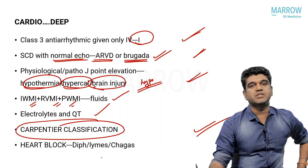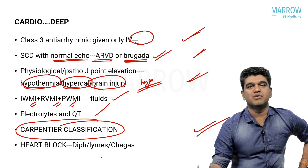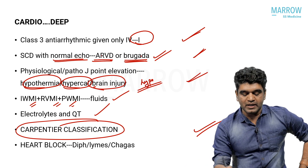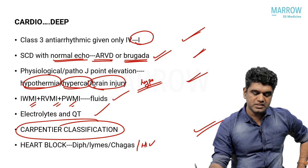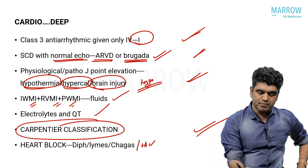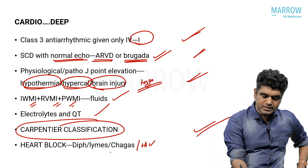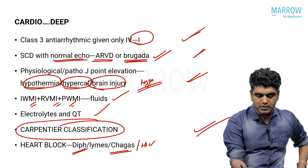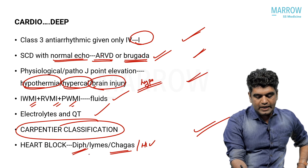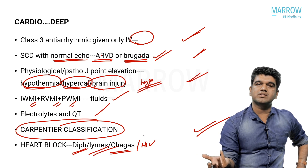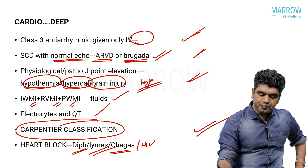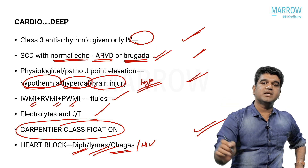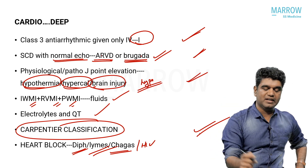Heart block caused by which organism — even if you watch the videos you may not answer this tough question. Diphtheria, Lyme, Chagas, and HIV were the four options. Many people know Chagas causes myocarditis and diphtheria causes heart involvement, and Lyme causing myocarditis is known, but heart block from HIV — how can you say the answer is HIV? That's a very tough question even after watching all videos.